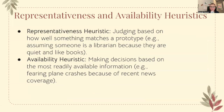We're going to talk about representativeness and availability heuristics. Representativeness heuristic is judging based on how well something matches a prototype — for example, assuming someone is a librarian because they're quiet and like books. Availability heuristic is making decisions based on the most readily available information, such as fearing plane crashes because of a recent crash in the news.